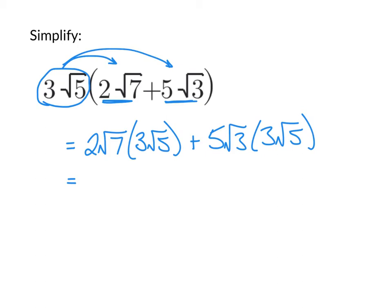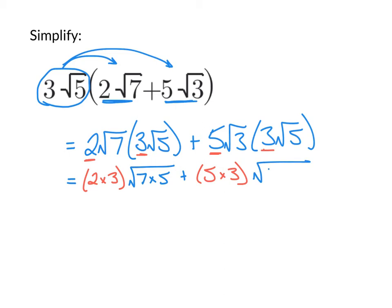In the first product, the two numbers outside the radicals are 2 and 3 — those get multiplied together. Underneath the square root, the radicands 7 and 5 get multiplied together. In the second product, the two numbers outside the square roots are 5 and 3 — we take 5 times 3. And underneath the square roots, the 3 and 5 get multiplied together.